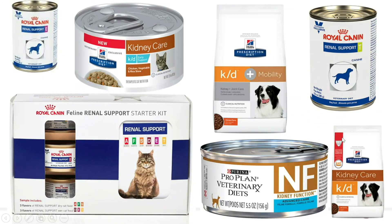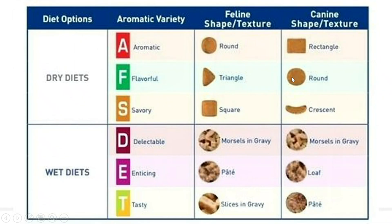There are several renal support diets available — Royal Canin, for example, has many different varieties. These diets are made because appetite is suppressed in dogs or cats with kidney disease, and you do want them to eat. All of these different flavors and types of food are meant to give the animal options, and it's a trial-and-error process to find what your dog or cat will actually eat.